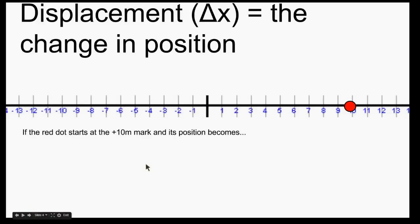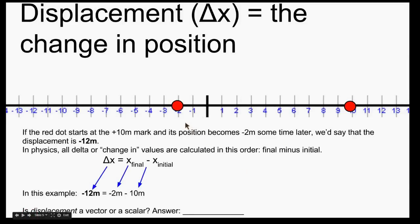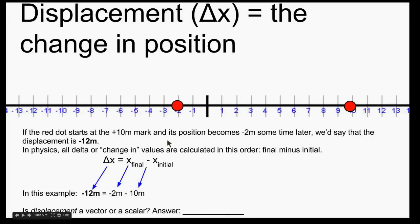Displacement is the change in position. Let's say the red dot starts at the positive 10 meter mark and then later goes to the negative 2 meter mark. We'd say the displacement is negative 12 meters — from 10 all the way over to negative 2. Whenever we calculate a change in position, or any change in values in physics, we always go final minus initial. The final position is negative 2 meters minus the initial position of positive 10 meters, which gives us negative 12 meters.